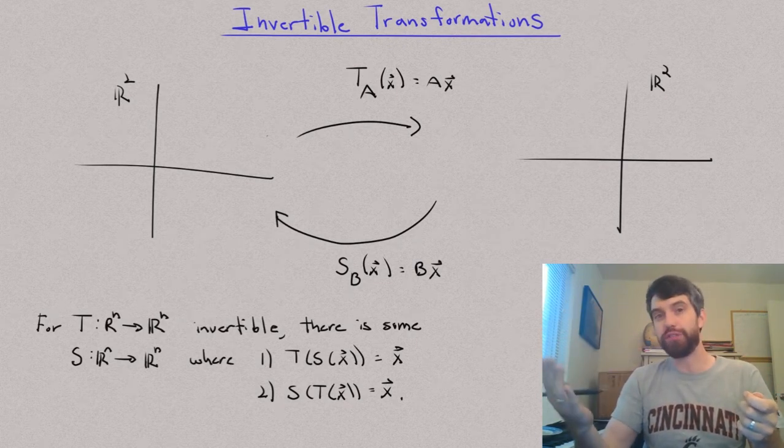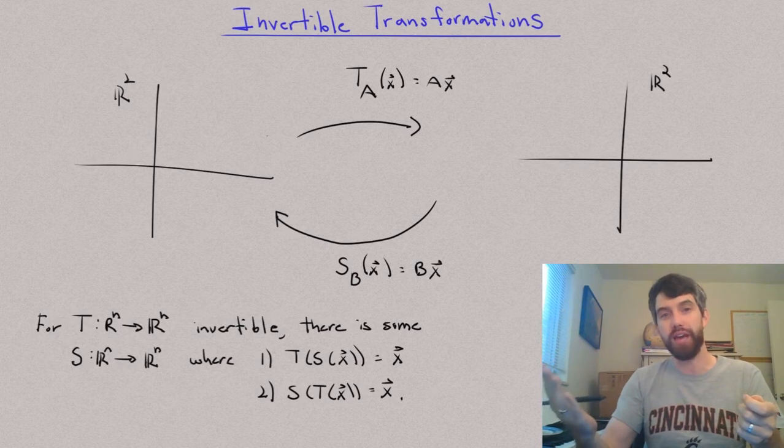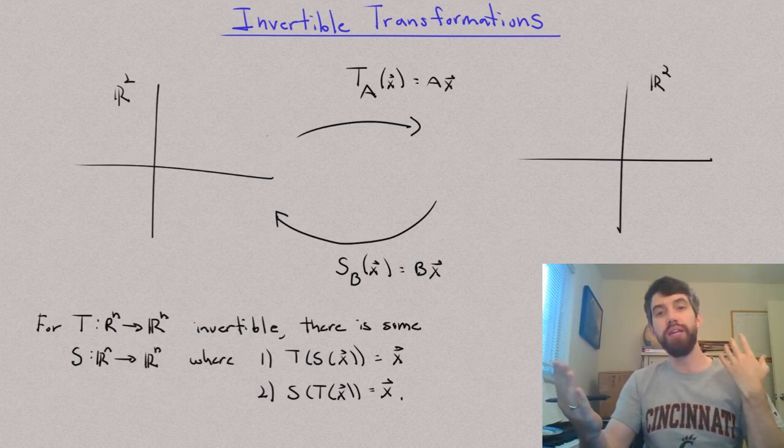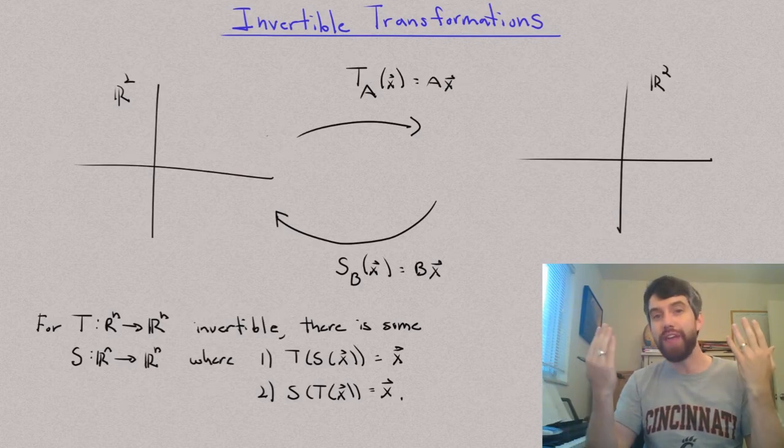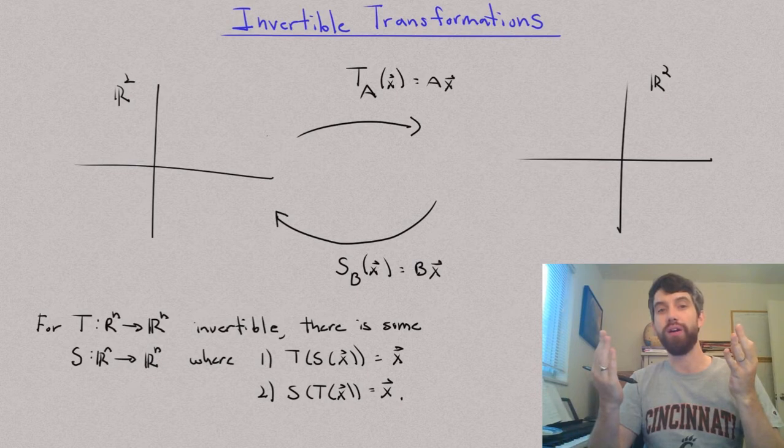I need to say something like this. A transformation, a linear transformation, is invertible if and only if the corresponding matrix that represents that linear transformation, if that matrix is invertible. And that connection is going to be one of our key facts for linear transformations.